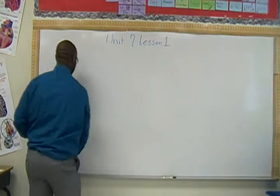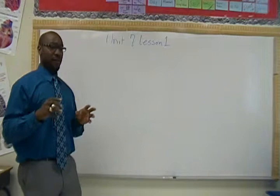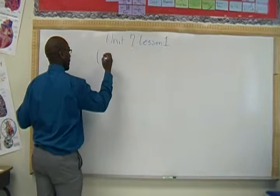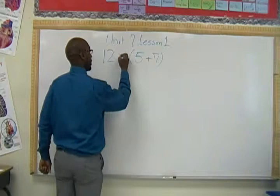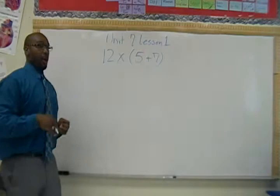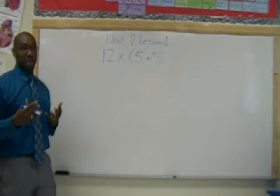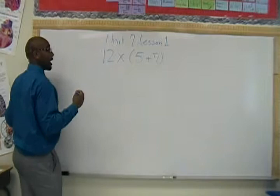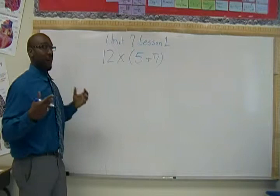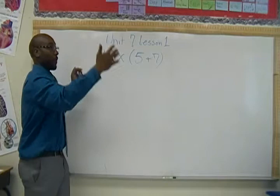The last thing we did in class was talk about order of operations and how to write out those types of problems. So let's say we have 12 times, and then in parentheses, 5 plus 7. We know we have to do 5 plus 7 first because step one of PEMDAS — order of operations — is parentheses. So we need to tell people we want to add first. We can say '12 times the sum of 5 and 7,' or write '12 times (5 plus 7).'